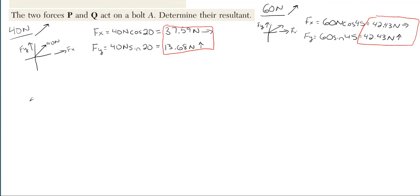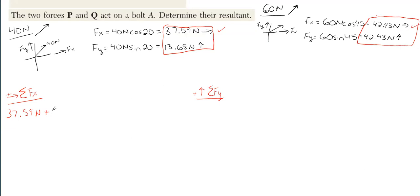Now we're going to sum forces in the X direction, taking everything to the right as positive, to get two final resultant forces. For the X direction: 37.59 newtons from the 40 is to the right, so positive; and 42.43 newtons from the 60 is also to the right, so also positive. The total in the X direction comes out to 80.02 newtons, and since it's positive, the arrow direction is to the right.